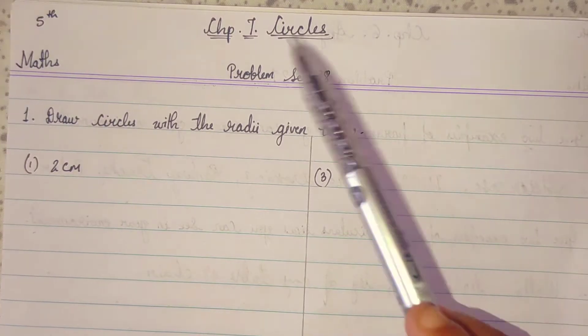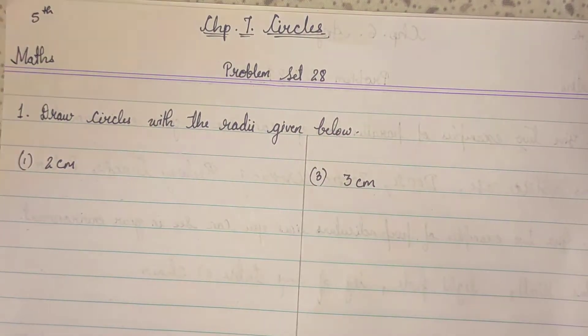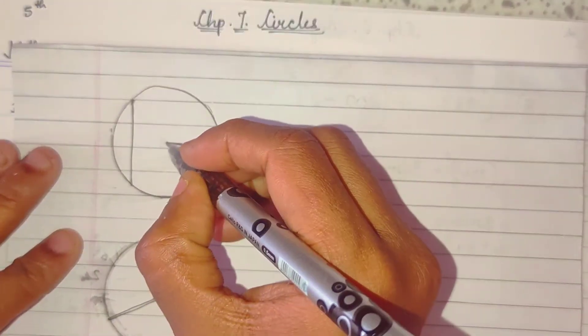Standard 5th Maths, Chapter 7, Circle, Problems are 28. Before we start this chapter, now see, what is circle? We will do a small revision.